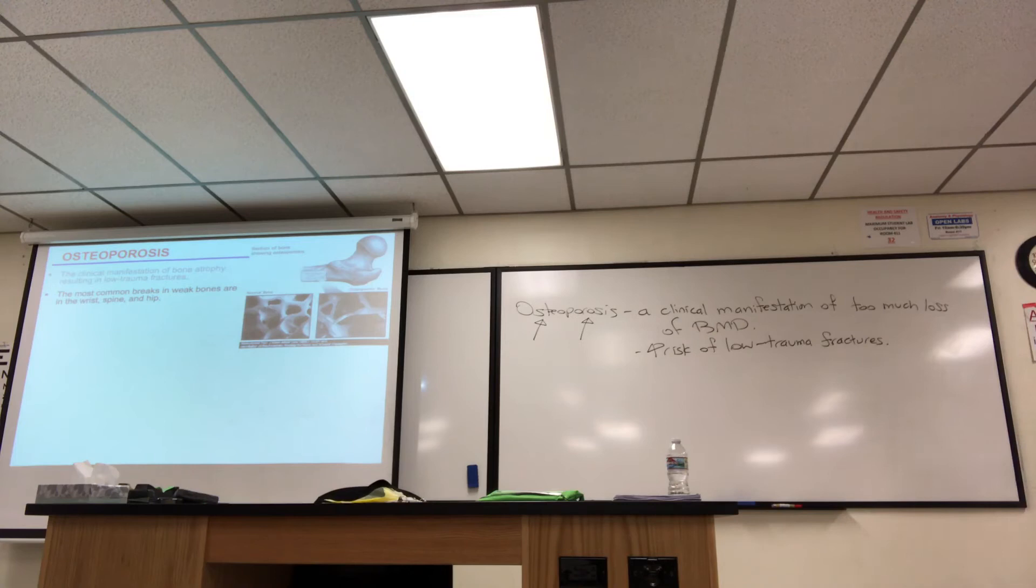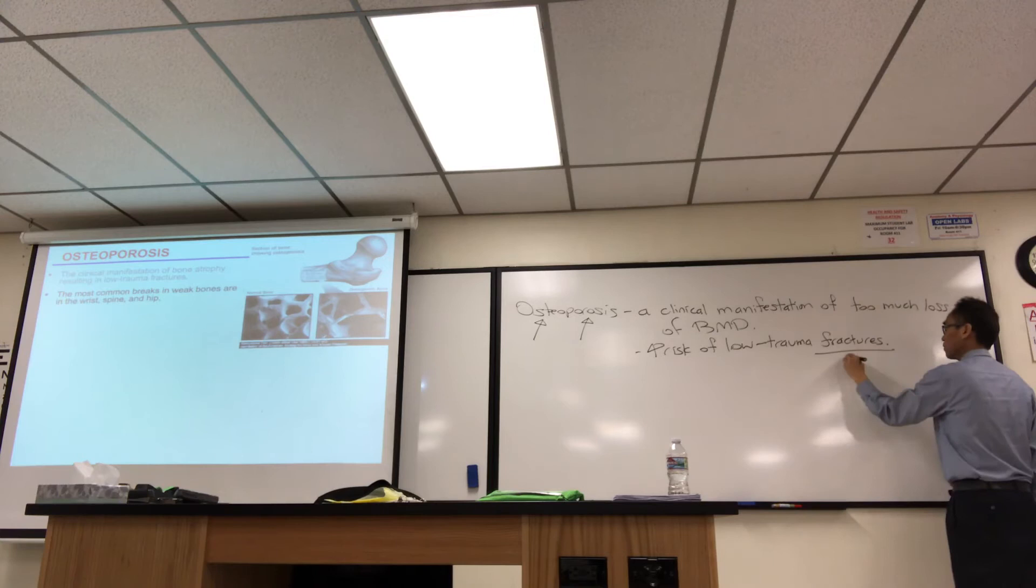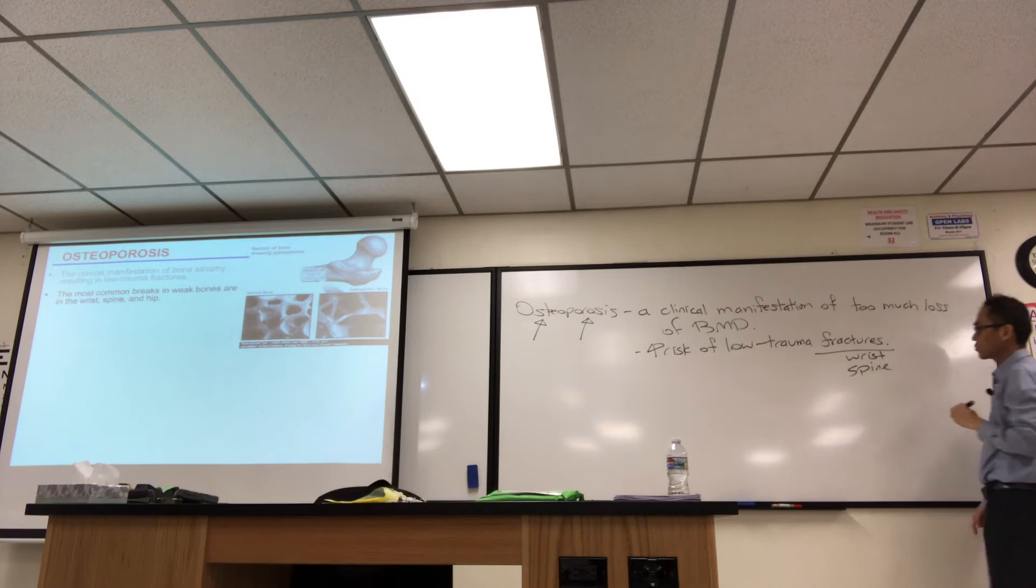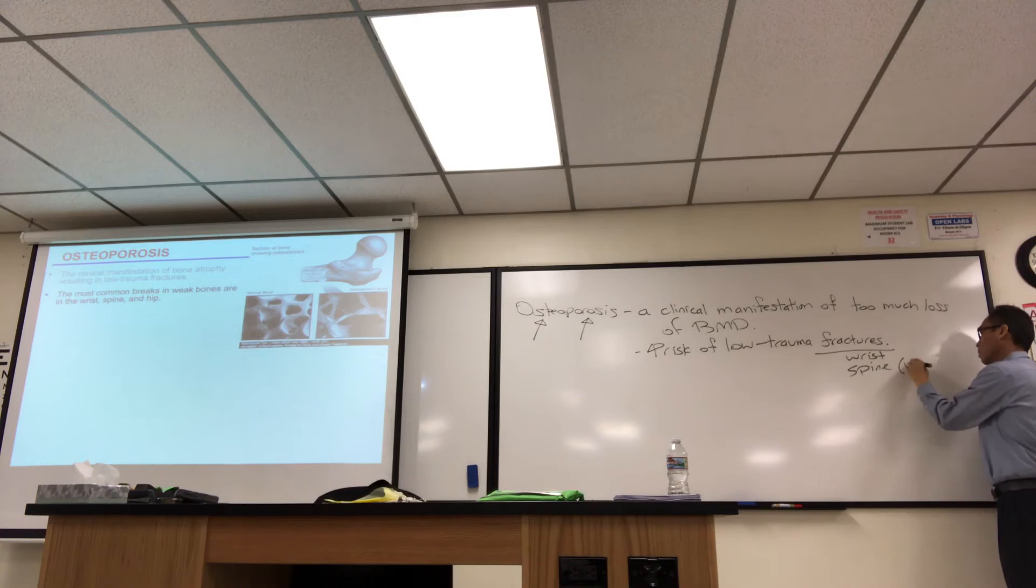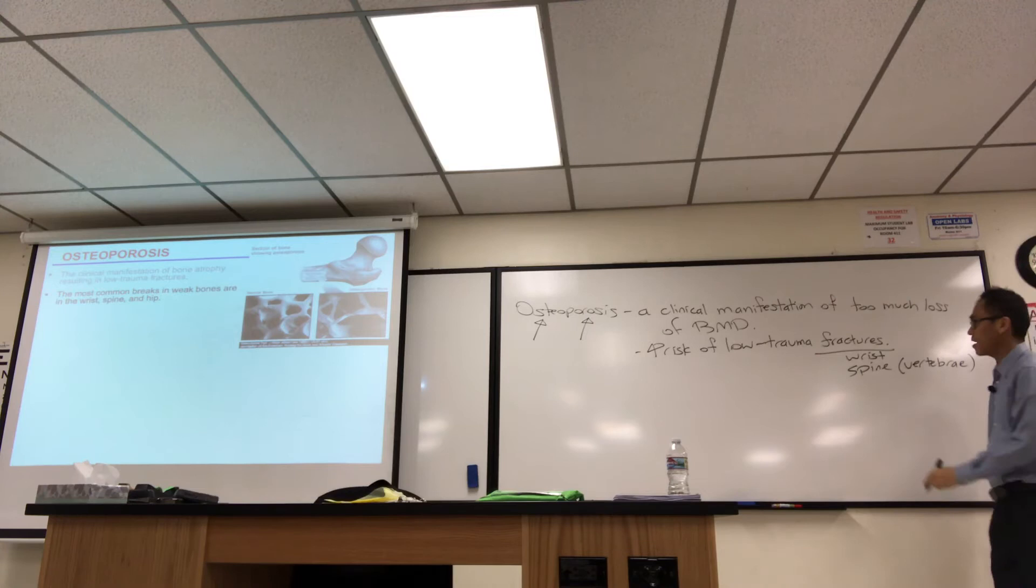You increase your risk of low trauma fractures. This is an age-related thing. Usually, you worry about the elderly when they have a spill and break their bones. The most common breaks, you know, wrist, spine, hip. Since we're in anatomy, the back bones are called vertebrae, right? In the hip. In particular, we kind of worry about the femoral neck. That's where it could snap.